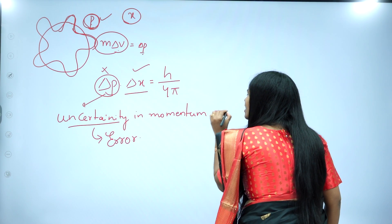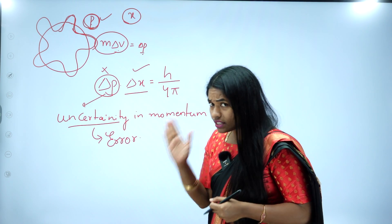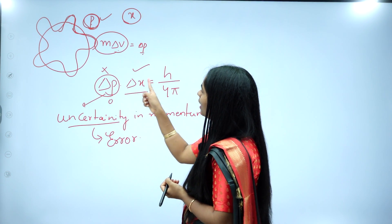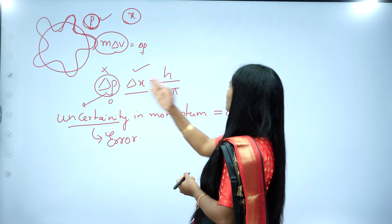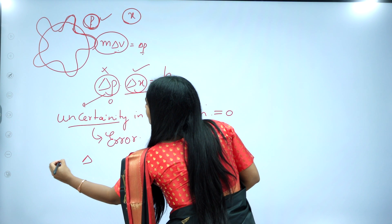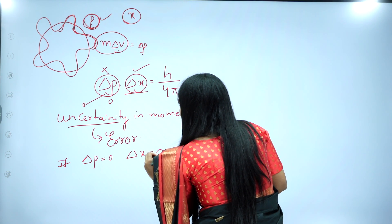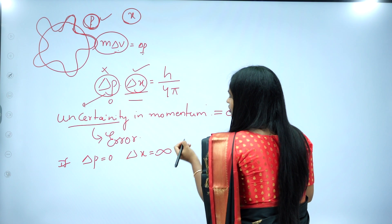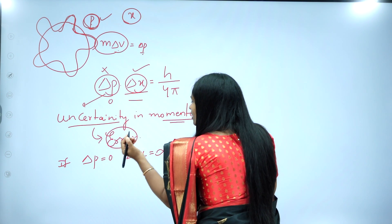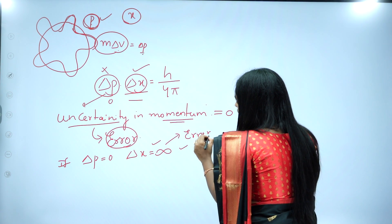If suppose there is no error in momentum — you are finding the momentum exactly, finding its velocity exactly — then error is zero. Substitute zero in this place: delta x into zero gives zero on this side, meaning something divided by zero. So delta x becomes infinity. If delta P equals zero, delta x becomes infinity — meaning if you find momentum exactly without error, then delta x will be infinity, which means you can't find the position at all.